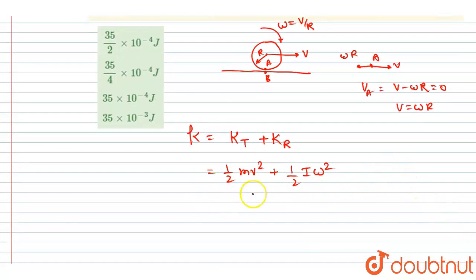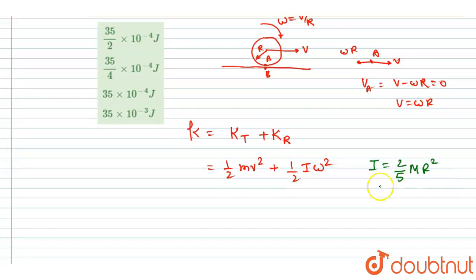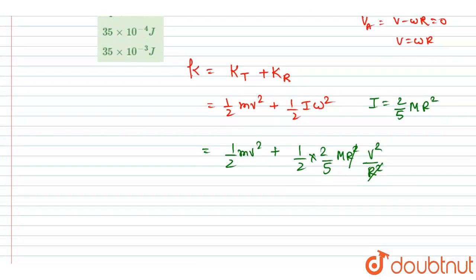Now you can just put the value of I and omega. And we know that for a solid sphere, the I is 2 by 5 mr squared. So just put that here in the question. So I will write half mv squared plus 2 by 5 mr squared v squared by r squared.